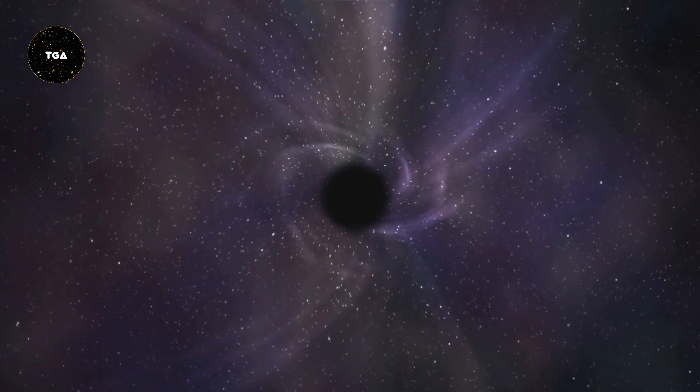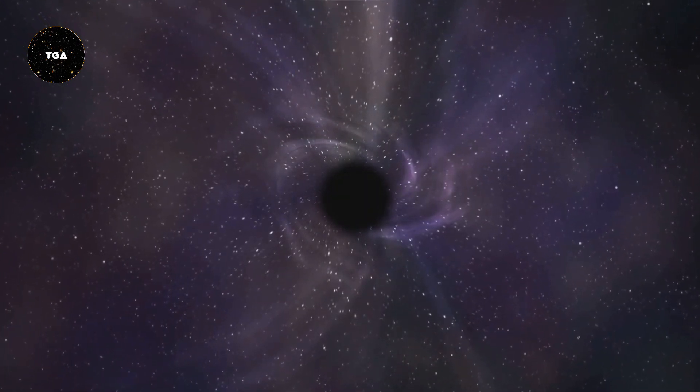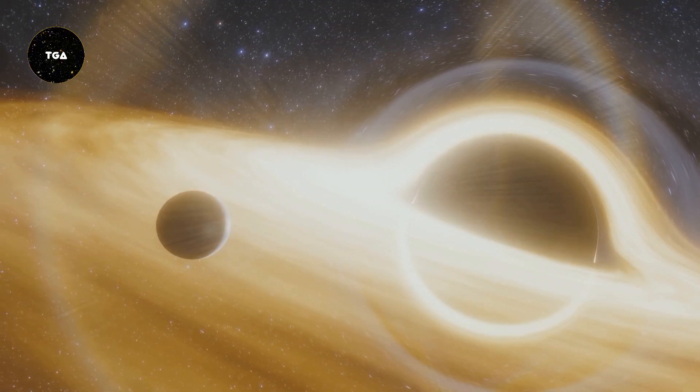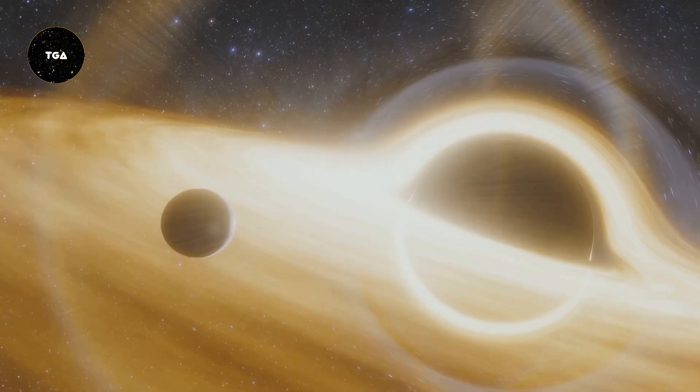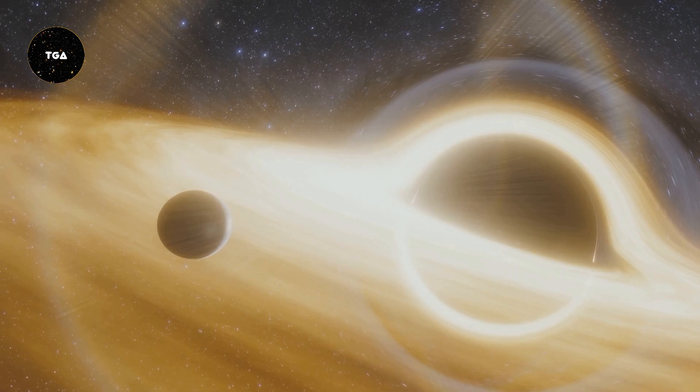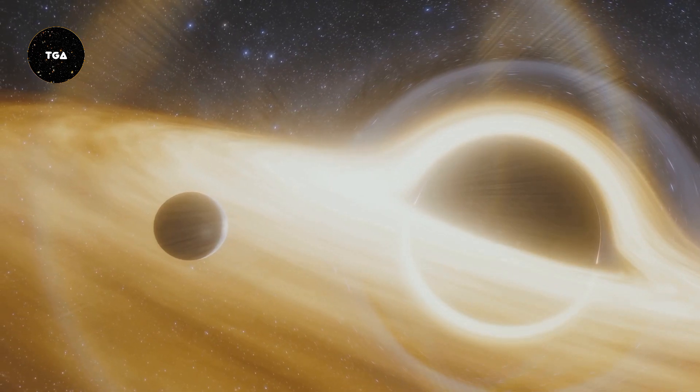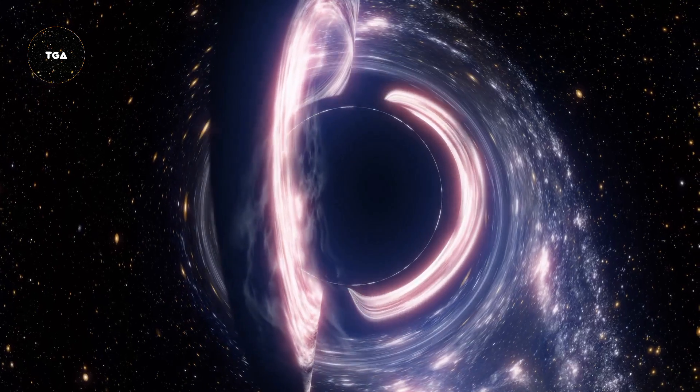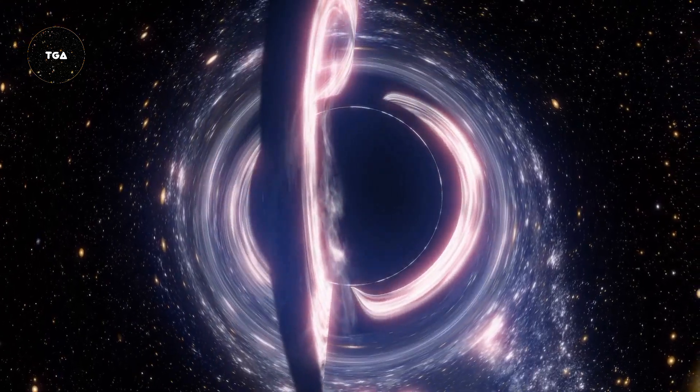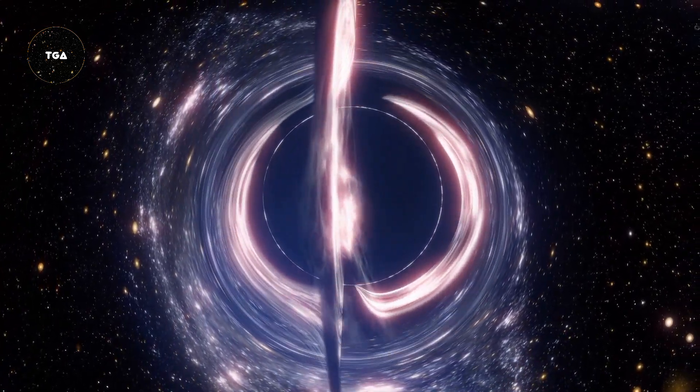Understanding black holes is challenging because they don't emit light. However, we can infer their presence by observing their effects on nearby objects. For example, if a star orbits an unseen massive object, it might be orbiting a black hole. We can also observe the high energy radiation emitted when material falls into a black hole.